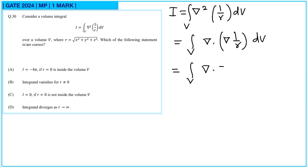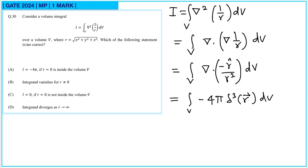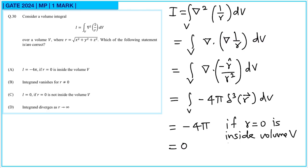The gradient of 1/R is minus R-cap divided by R squared. The divergence of R-cap upon R squared can be written as 4π times the delta cube of R. So the integral equals minus 4π if R equals 0 is inside volume V, and equals 0 if R equals 0 is outside volume V, or if R is not equal to 0.